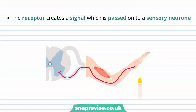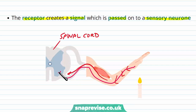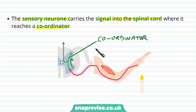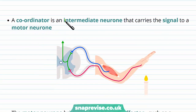This receptor creates a signal and passes it to a particular type of neuron known as a sensory neuron. The sensory neuron takes this electrical signal and transmits it all the way into the spinal cord, where it ends and synapses. So the sensory neuron carries the signal to the spinal cord and then it reaches a coordinator. The signal is passed on to something known as the coordinator, which decides what response needs to be carried out. It tends to be an intermediate neuron or a relay neuron, carrying the signal to the motor neuron.